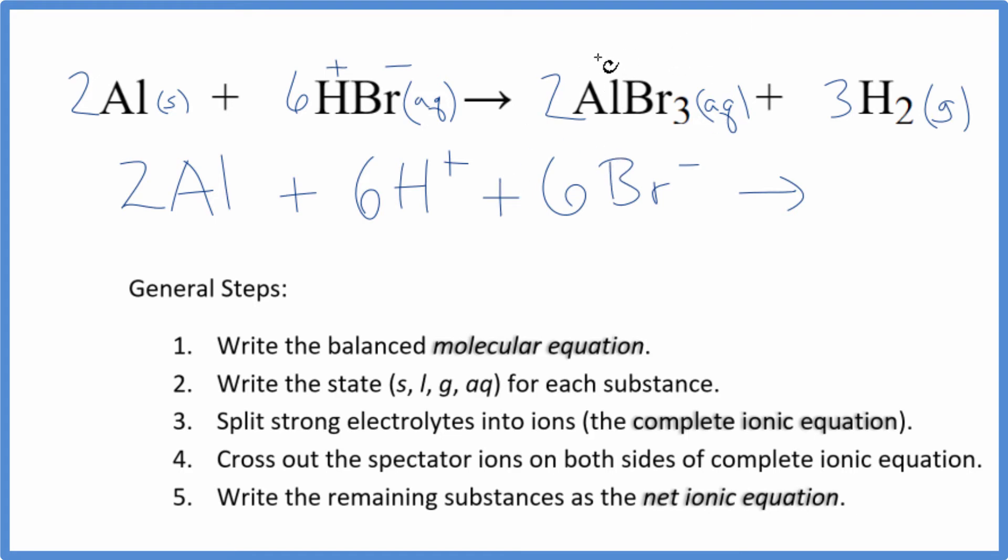For the products, aluminum, that's a 3+ ionic charge. Bromide we said minus. Two aluminum ions, so two of these aluminum ions here, plus two times three—six bromide ions. And then hydrogen, that's a gas, we don't split that apart. Just 3H2. This is the complete ionic equation.